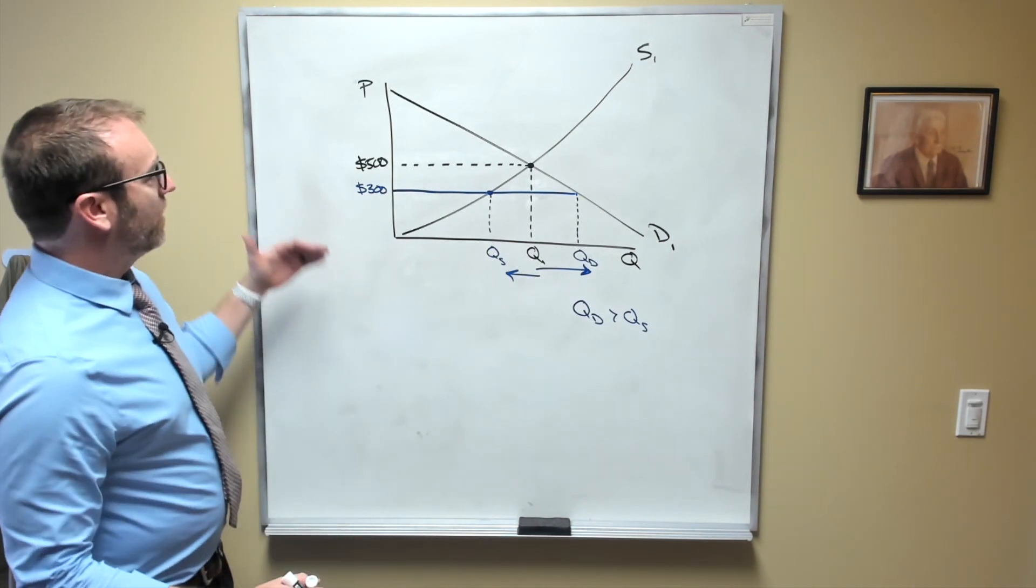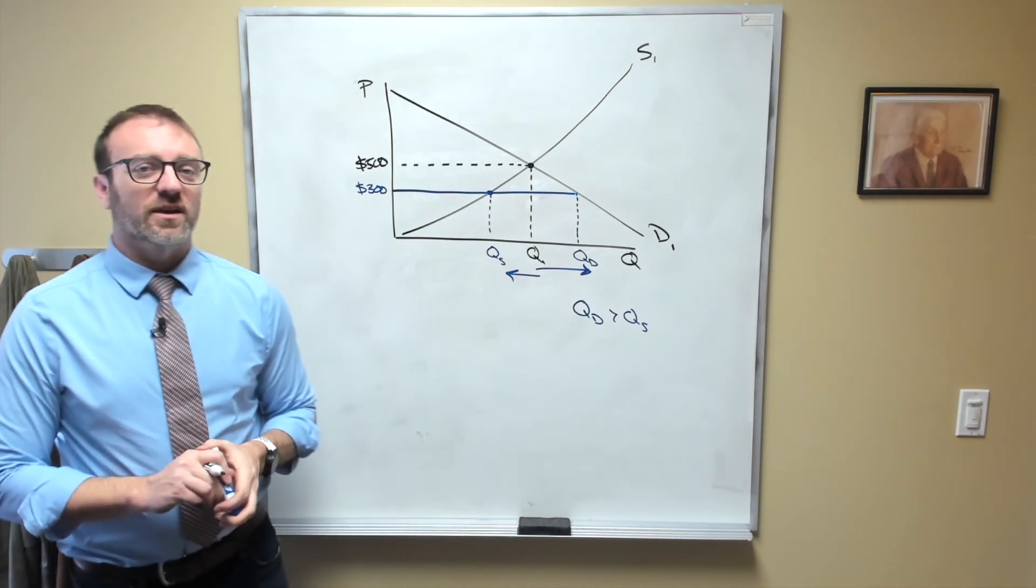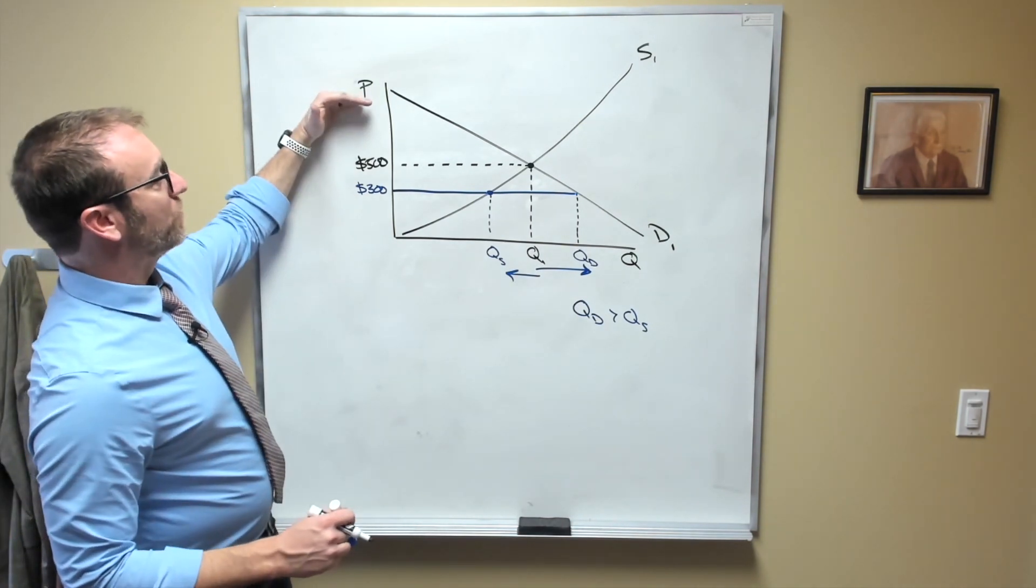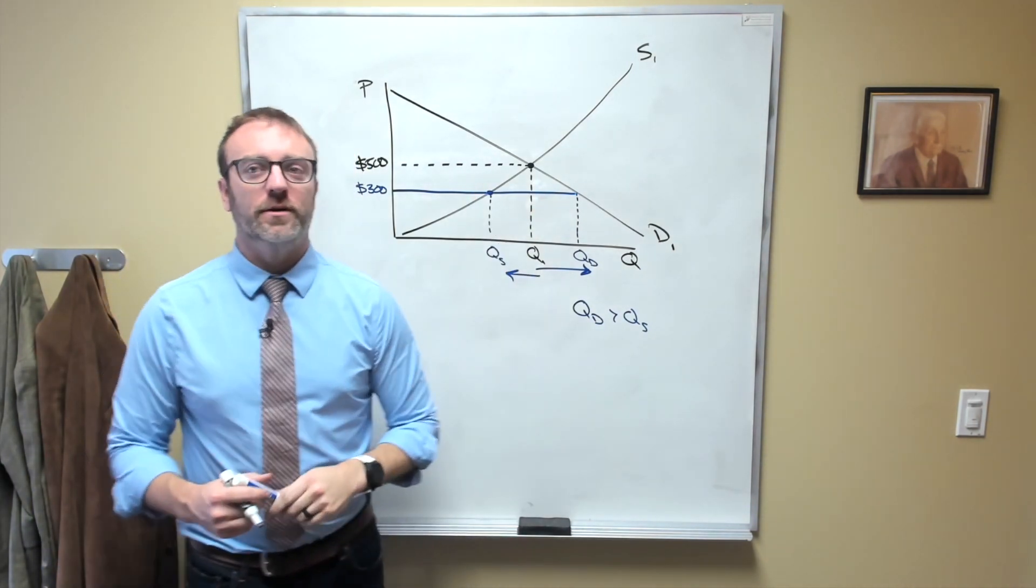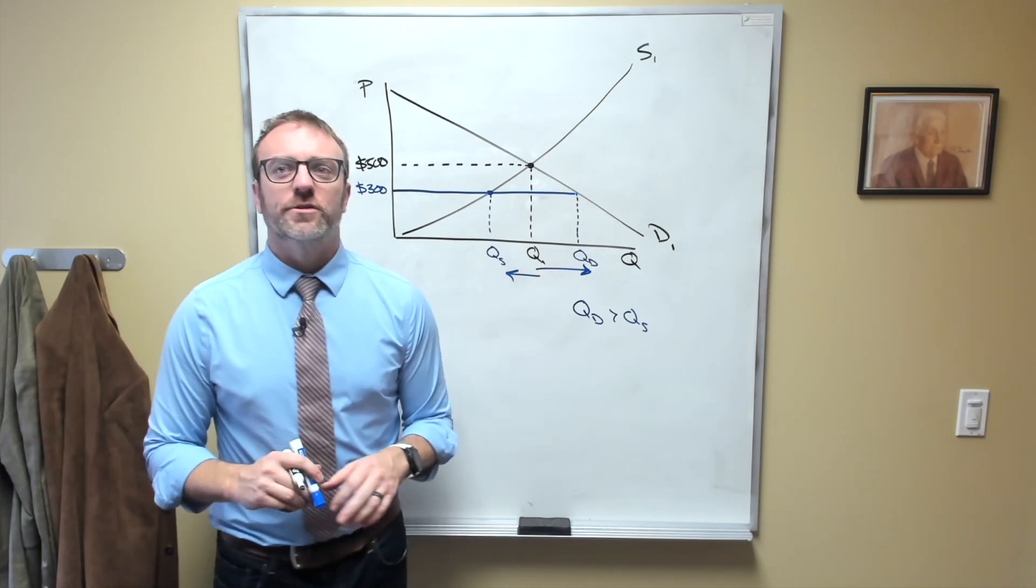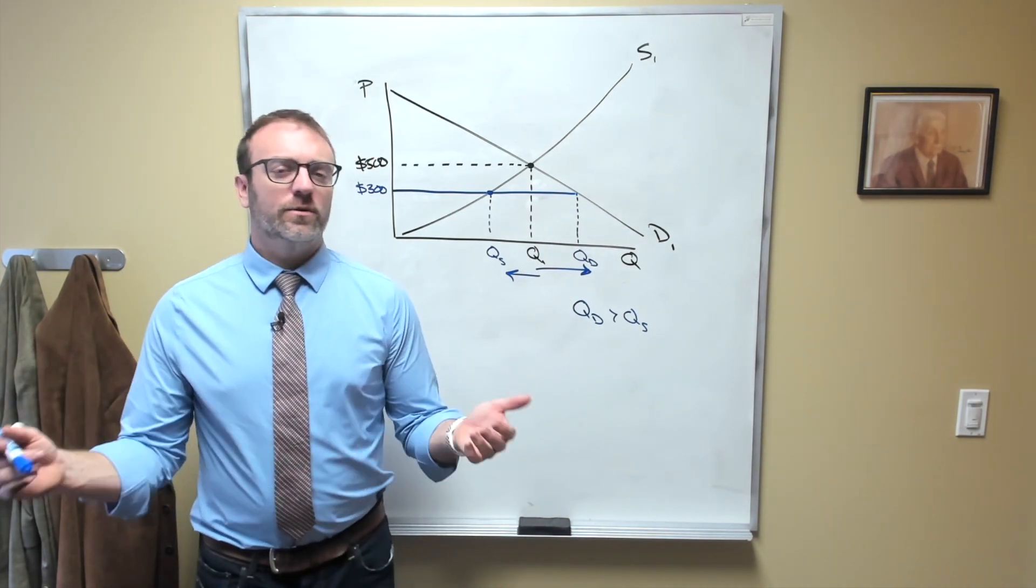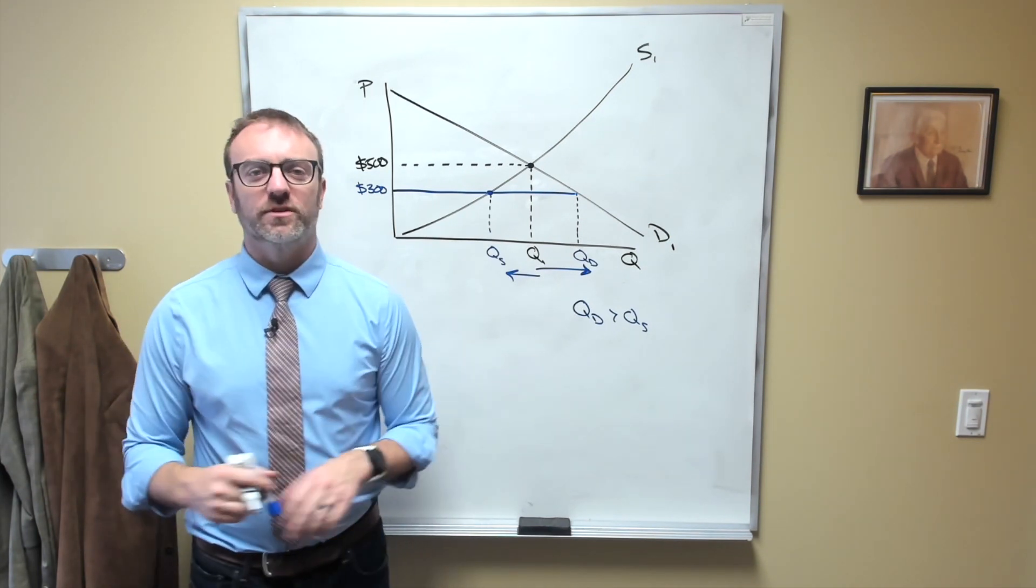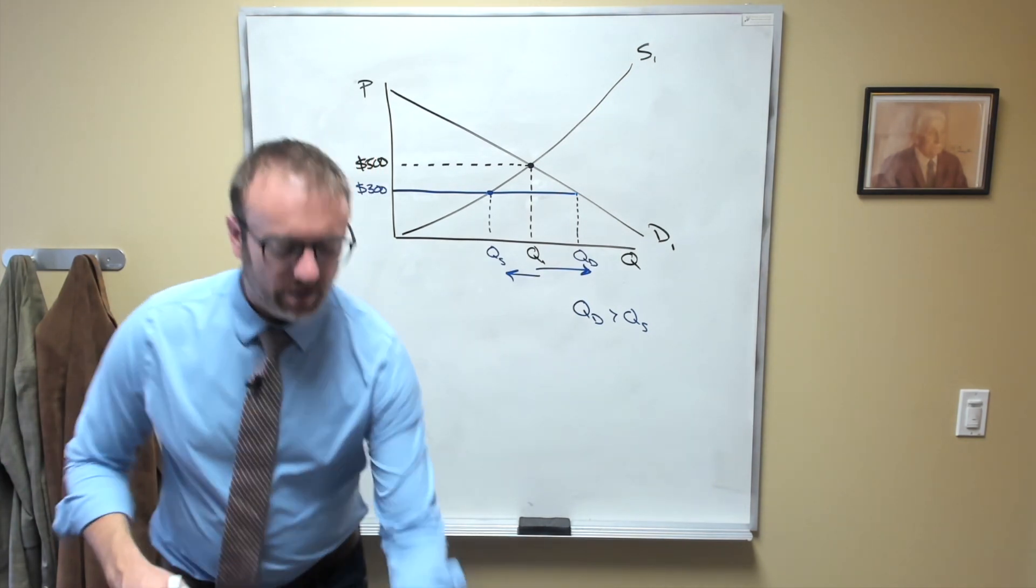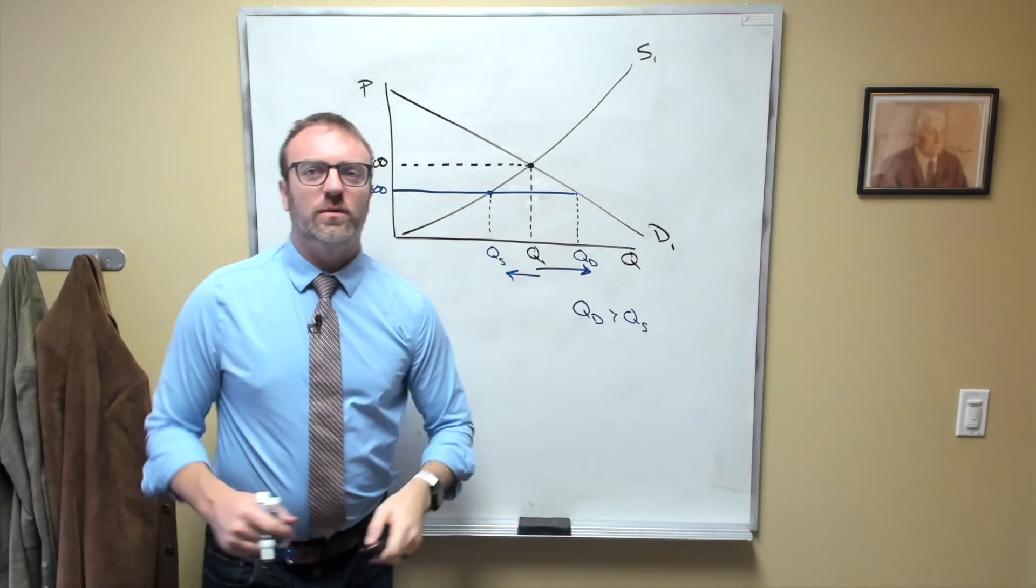Now, I should point out that in order for this price ceiling to actually have any effect whatsoever, it must be the case that the price ceiling is below the equilibrium price. If the price ceiling were set above the equilibrium price, then the equilibrium price would just remain. So for example, suppose that colleges aren't allowed by law to charge more than $1 million in U.S. dollars per year in tuition. What effect would that have on your college's tuition? Well, almost certainly none, because almost certainly none of you are paying $1 million a year to go to college. And so in order to have any effect whatsoever, the price ceiling must be below the equilibrium price.